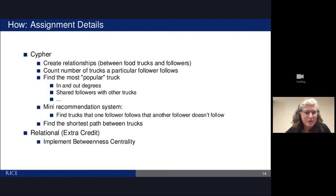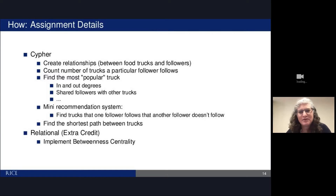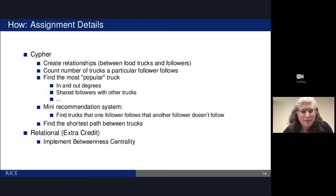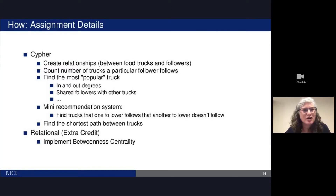We also included some queries for a mini recommendation system: can you find trucks that one follower follows that another doesn't follow, so that the second person might want to follow that truck? And we had them do things that Neo4j excels at, like finding the shortest path between trucks. For extra credit, I had them implement a betweenness centrality metric in a relational system, which is really hard to do — so students were very excited by the contrast of how hard it is in relational but how easy it is in Neo4j.